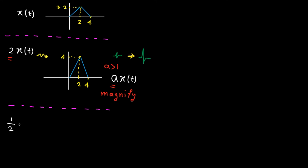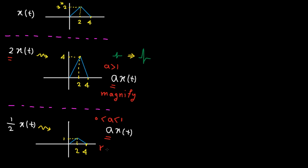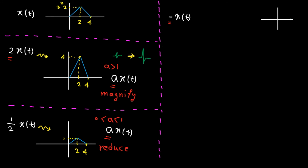Now let's multiply the amplitude by half. In this case the amplitude is weaker. When we multiply it by half, the voice becomes quieter. To plot the signal, all we need to do is multiply the value by half; the signal doesn't change in the time direction. In general, for A·x(t) when A is between 0 and 1, we compress the signal in the value direction. Now let's multiply the amplitude by -1. In this case, all we need to do is reflect the signal with respect to the x-axis. In this example, the value of 2 on the y-axis is mapped to -2.